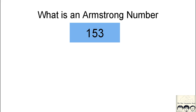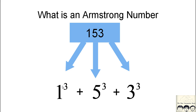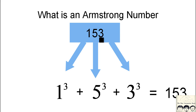Say you are given a number like 153 and you have to determine whether it is an Armstrong number or not. The first thing you need to do is separate the digits — that's 1, 5, and 3 — and then cube each one: 1 raised to 3, plus 5 raised to 3, plus 3 raised to 3. You add these three numbers to get the sum. If that sum equals the original number, then it is an Armstrong number.